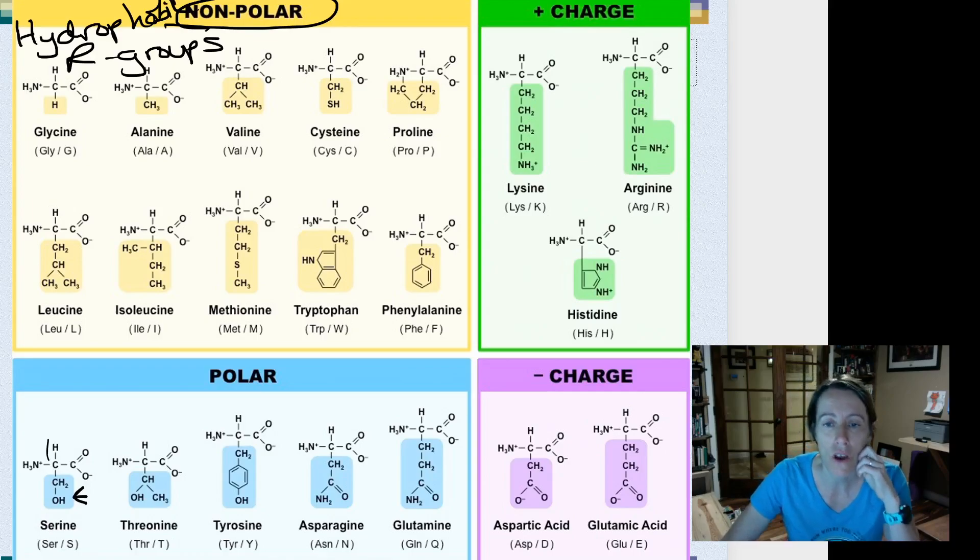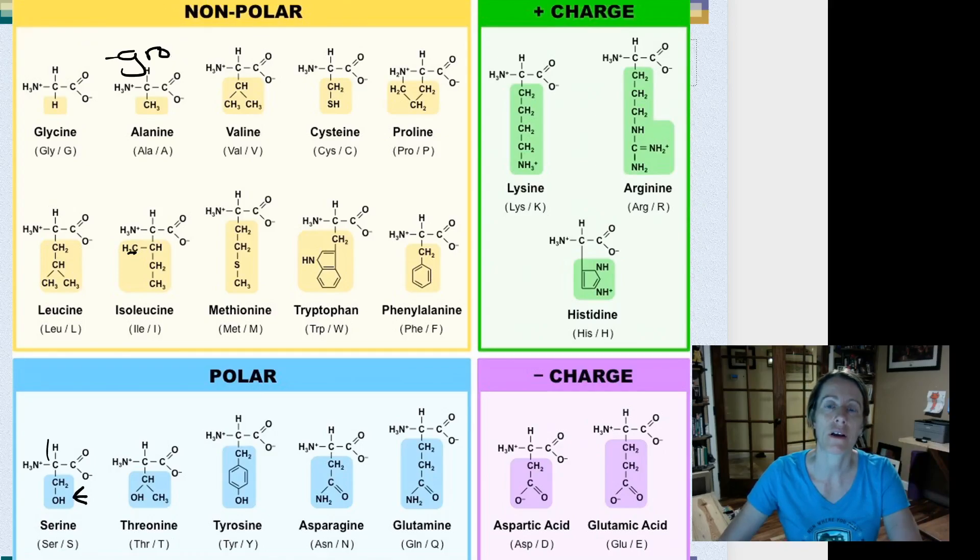Now, if we look at these, there's no charges here. It's all Cs and Hs, Cs and Hs, Cs and Hs, lots of Cs and Hs around here. No charges. So if there's no charges or partial charges, then there's no attraction for water. So these are our hydrophobic R groups.